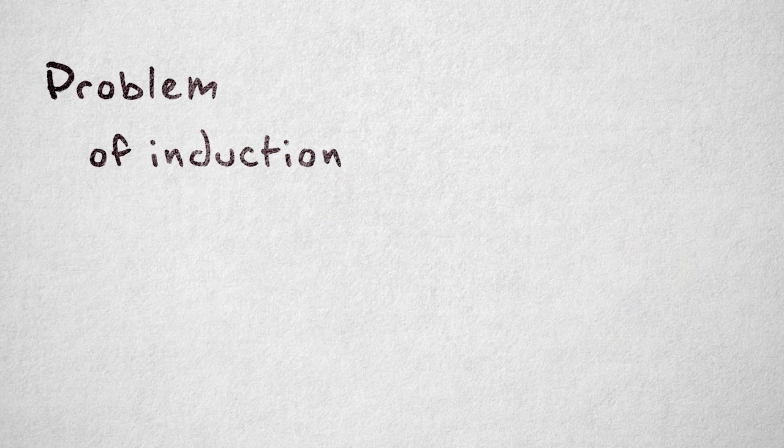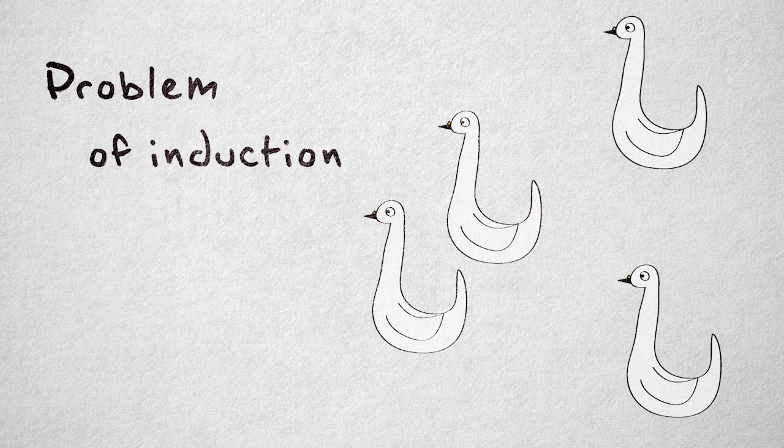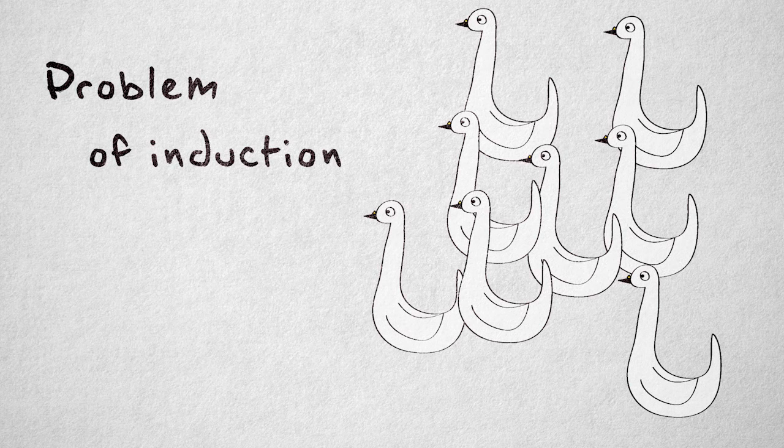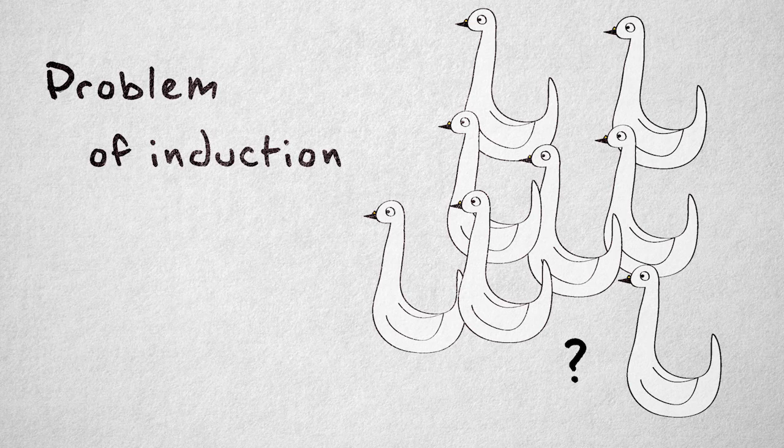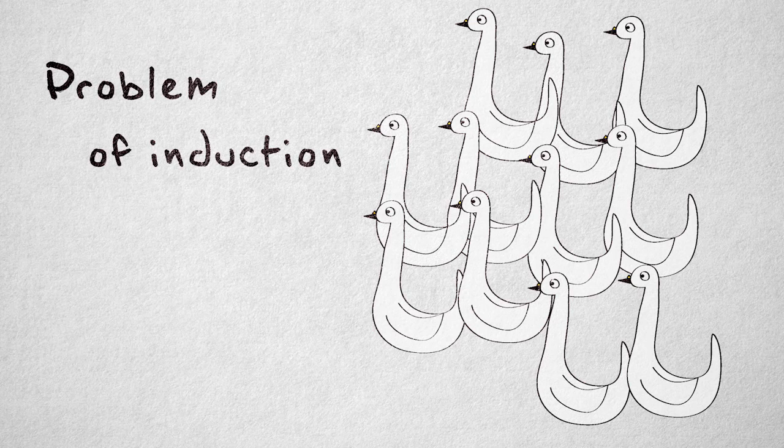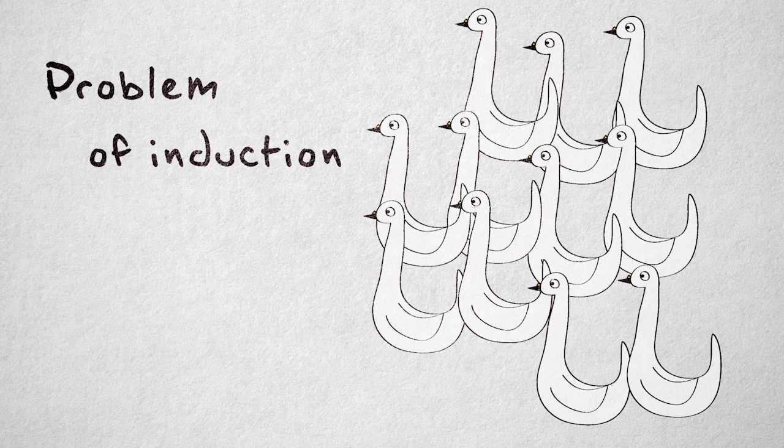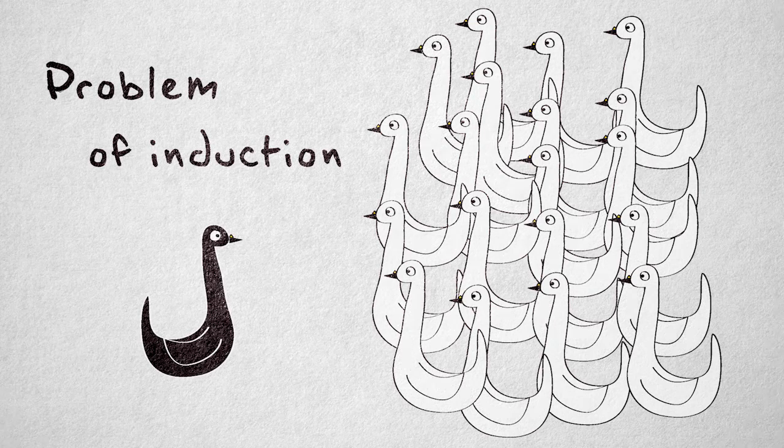Hume also showed us the problem of induction. Even though you've consistently observed a phenomenon again and again, there is no guarantee your next observation will agree with the previous ones. For a long time, from the perspective of Europeans at least, all recorded sightings of swans showed that swans are white. Only after Australia was discovered did we find out that there are also black swans.